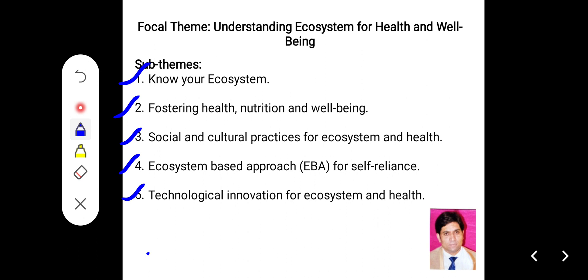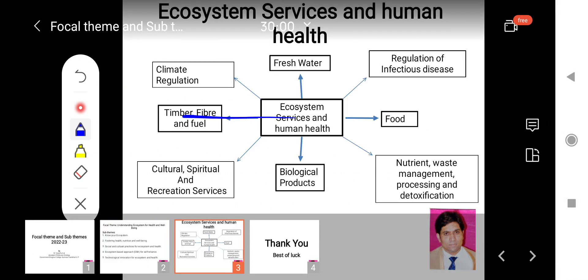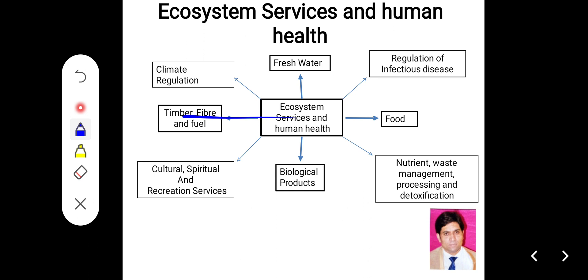This slide shows how the existence of human beings depends on the ecosystem. We are obtaining food, fresh water, biological products, timber, fiber and fuel all from the ecosystem. The ecosystem also controls the climate of the area, the existence of infectious disease, nutrients in crops, and detoxification of the environment.